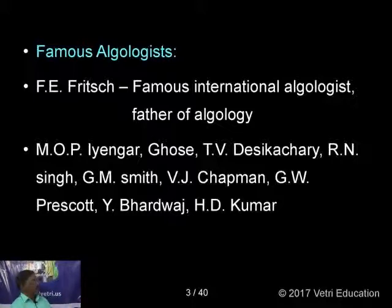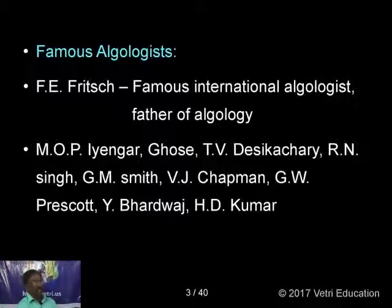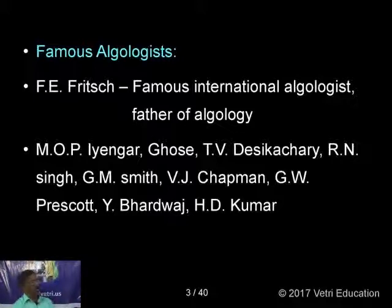Regarding India, the famous algologists are M.O.P. Iyengar and Ghosh from Tamil Nadu, T.V. Deshikachari from Tamil Nadu, Auran Singh, G.M. Smith, V.J. Chapman, G.W. Prescott, V. Bharadwaj, H.D. Kumar, Sundar Lingam, and Krishnamurti — these are the notable people among algologists.